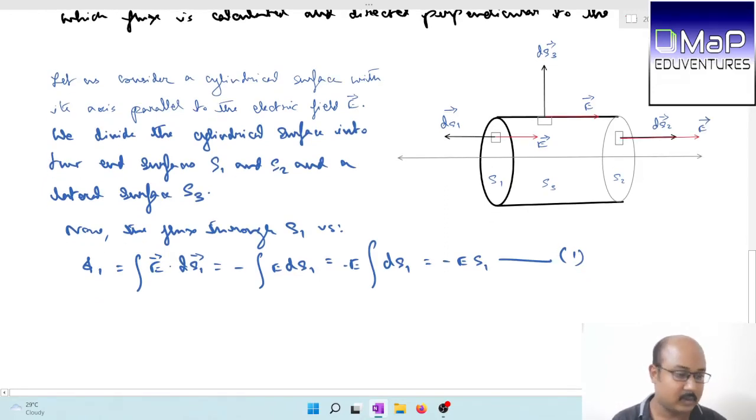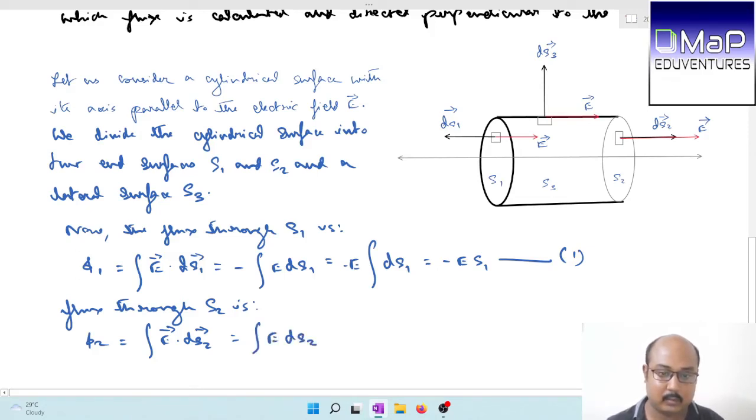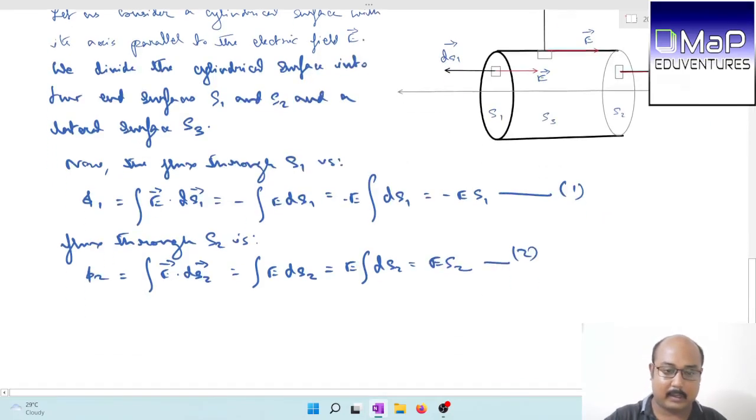Flux through the surface S2, phi 2 equals integration E dot dS2. In this case, E and dS2 are parallel. This dot product reduces to E dS2. Since electric field intensity is constant, this equals E times S2, equation number 2.